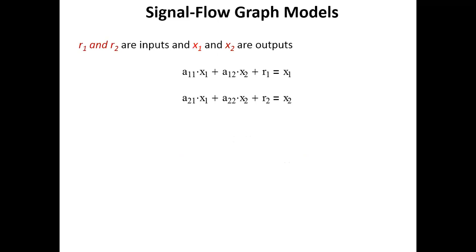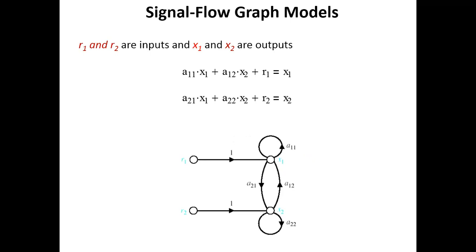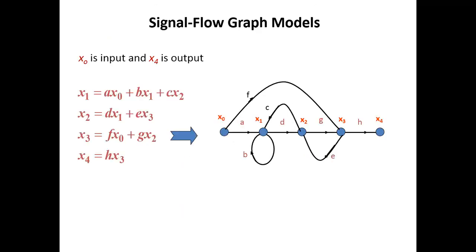In another signal flow graph model, r1 and r2 are the inputs and x1 and x2 are the outputs. We can write: x1 = a11·x1 + a12·x2 + r1. There are self-loops moving through a11·x1 and a22·x2. For a further example: x1 = a·x0 + b·x1 + c·x2, and x2 = d·x1 + e·x3, and x3 = f·x0 + g·x2.